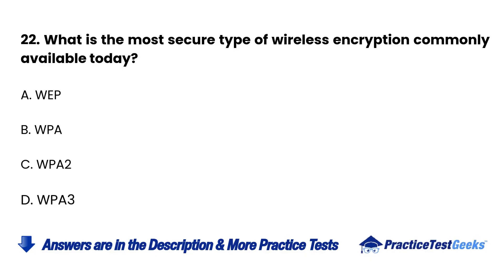Question 22: What is the most secure type of wireless encryption commonly available today? A. WEP. B. WPA. C. WPA2.